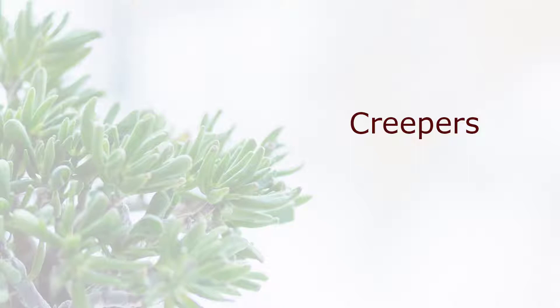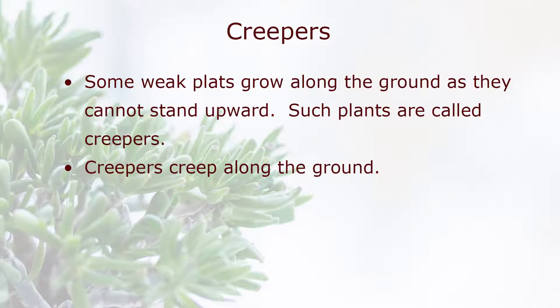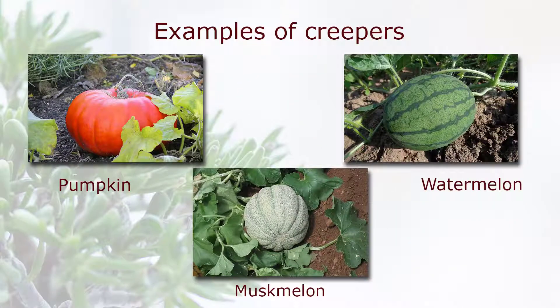Creepers. Some weak plants grow along the ground, as they cannot stand upward. Such plants are called creepers. Creepers creep along the ground. Examples of creepers: pumpkin, watermelon, and muskmelon.